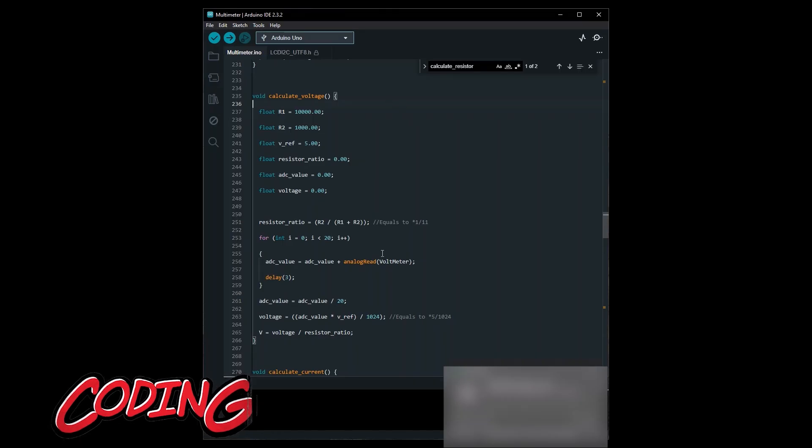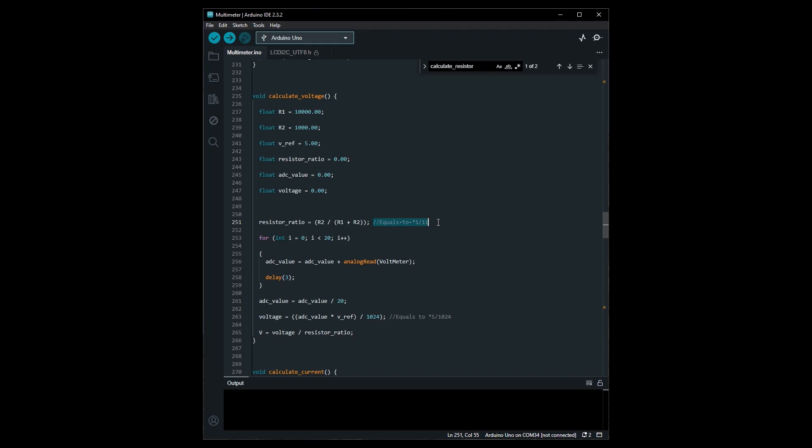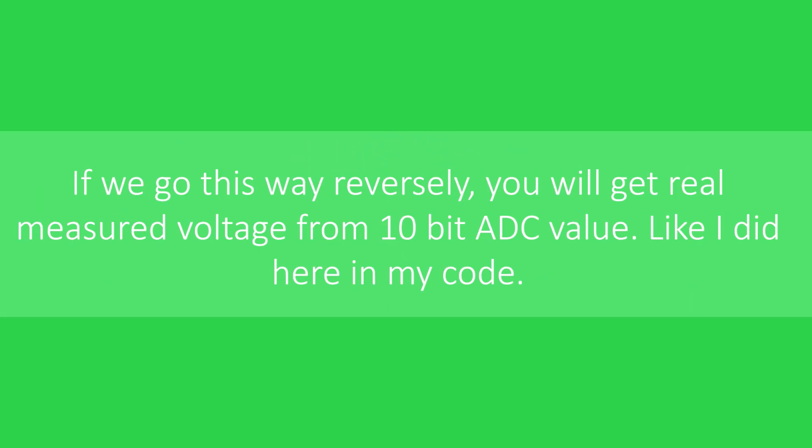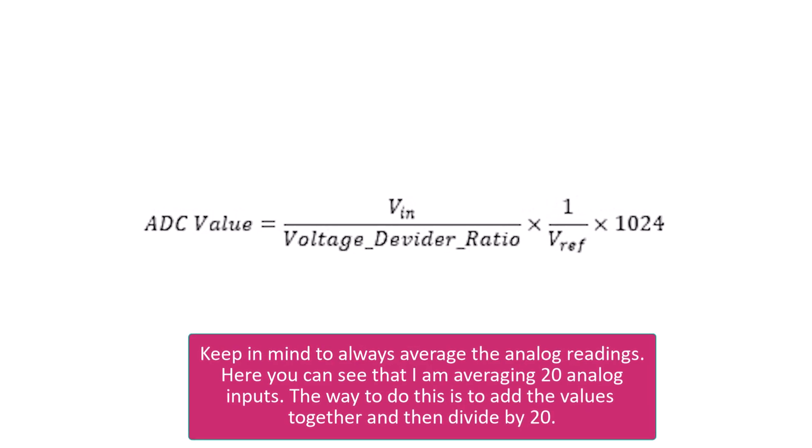Let's talk about the voltmeter code. The Arduino reads the analog voltage at pin A0, which is in the range of 0 to 5 volts. The scaling factor of 55 divided by 1023 is used to convert the analog reading to the actual voltage. This is because the voltage divider reduces the input voltage by a factor of 11, then it will divide it by 5, which is the analog reference voltage of Arduino Uno, and it multiplied by 1024. That comes from the Arduino's 10-bit ADC, which converts analog voltages to values between 0 and 1023. If we go this way reversely, you will get the real measured voltage from the 10-bit ADC value, like I did here in my code. Keep in mind to always average the analog readings. Here you can see that I am averaging 20 analog inputs. The way to do this is to add the values together and then divide by 20.